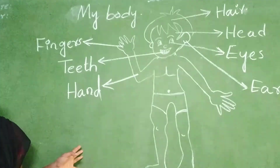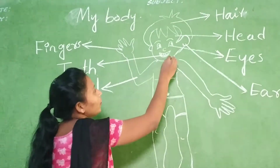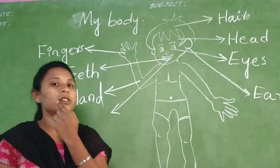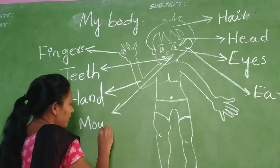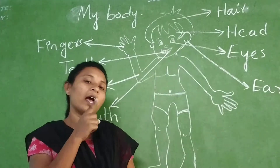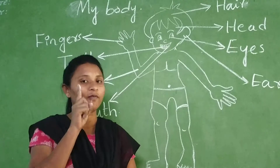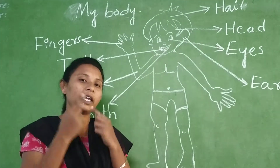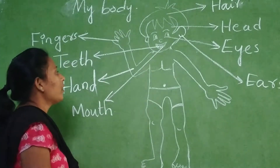What is this, children? Mouth. With my mouth — I have one mouth. For you children, how many mouths? One only, right? I can eat and I can talk with my mouth.